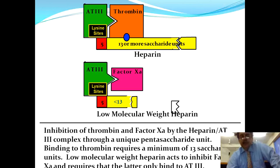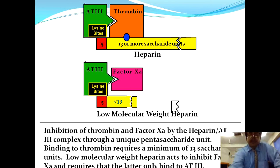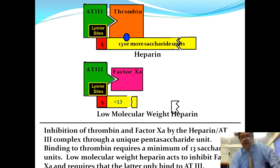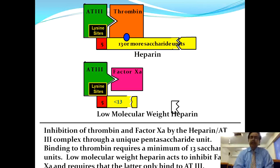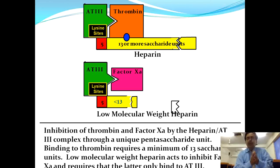Inhibition of thrombin and factor 10A by the heparin-antithrombin 3 complex occurs through a unique pentasaccharide unit. Binding to thrombin requires a minimum of 13 pentasaccharide units. Low molecular weight heparin inhibits factor 10A and requires only binding to antithrombin 3. Heparin itself has no intrinsic action — it brings antithrombin 3 and factor 10A together to have its effects.